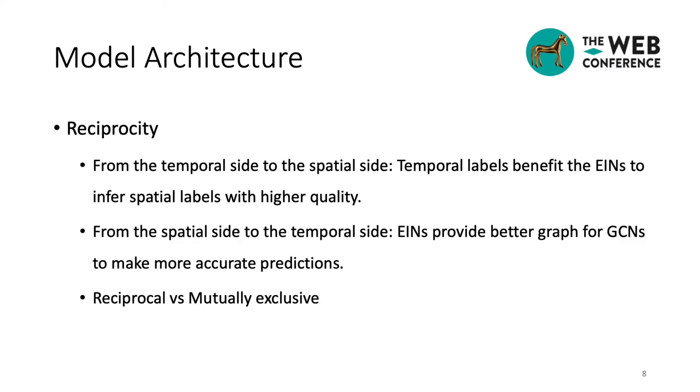Now, let's focus on the reciprocity of the REST framework. As we have mentioned before, in many real scenarios, we don't have enough useful labels to learn the spatial dependencies among two time series vertices. However, through the REST framework, we connect the spatial and temporal side together to optimize model parameters. Therefore, the temporal labels can be fully utilized to help the EINs to infer spatial labels with higher quality. Correspondingly, EINs could provide better graph structure for GCNs to make more accurate predictions. And with the training procedure going iteratively, both sides could benefit each other and finally get the optimal parameters.